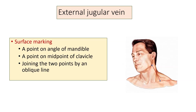Coming to the surface marking of the external jugular vein: take a point on the angle of the mandible, then take another point on the middle of the clavicle, and join these two points — that will mark the position of the external jugular vein.